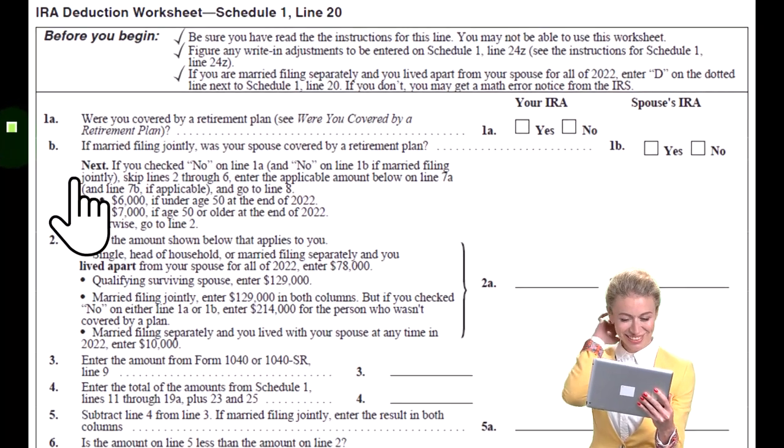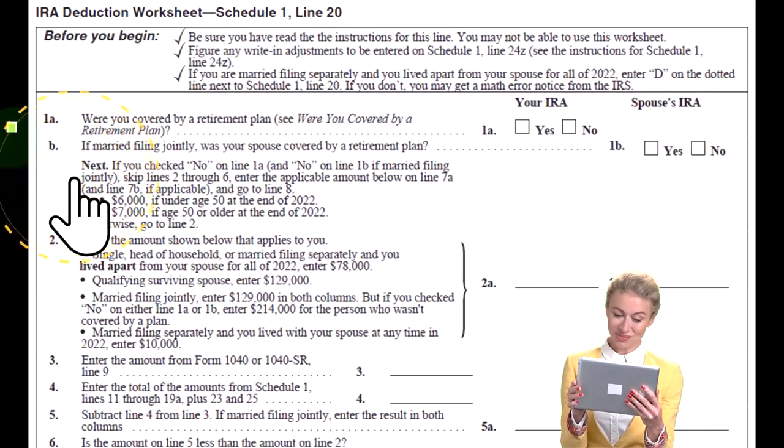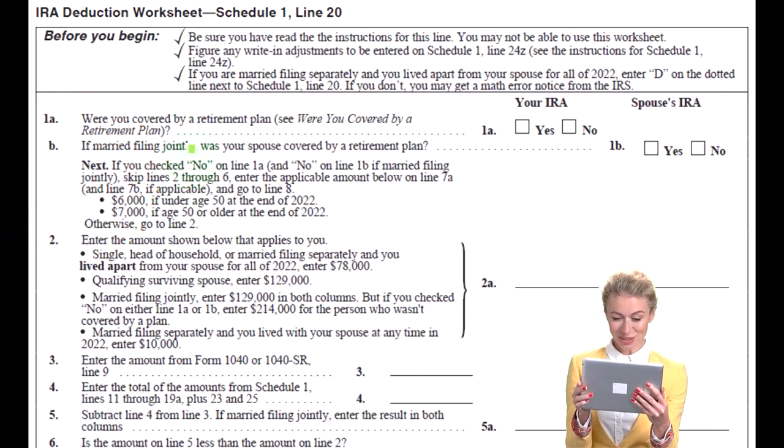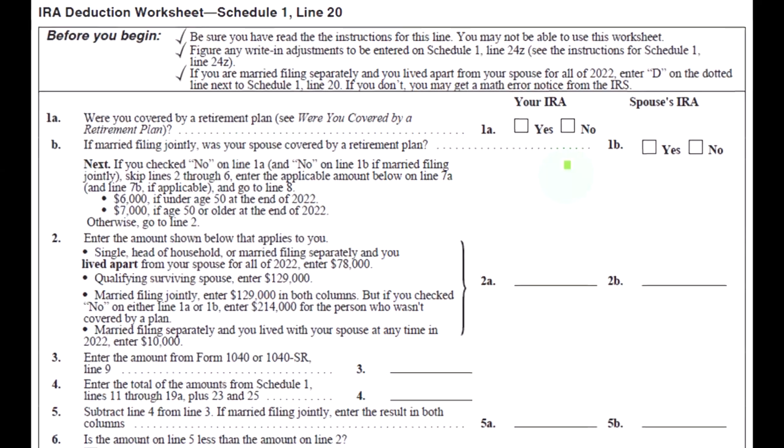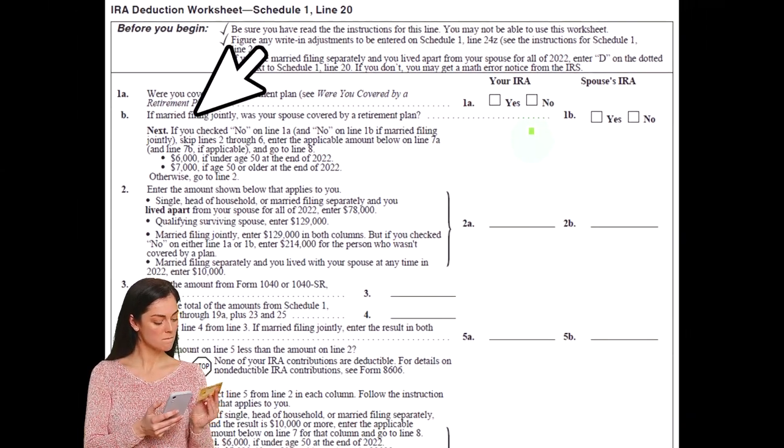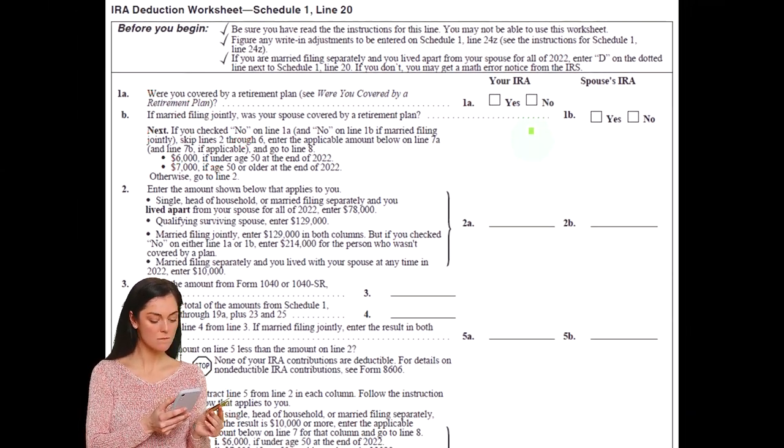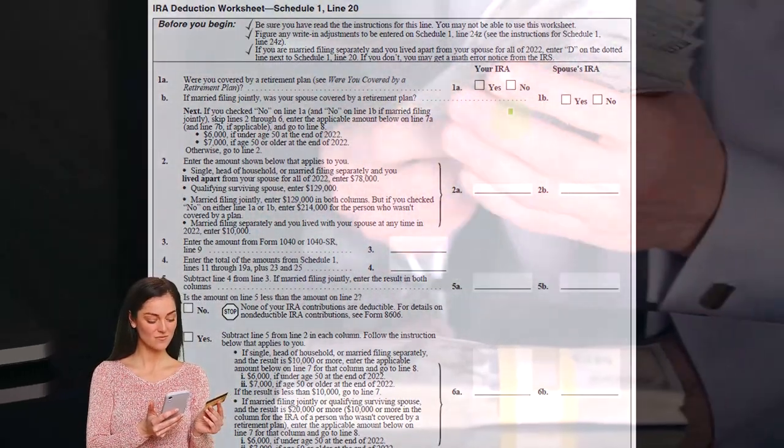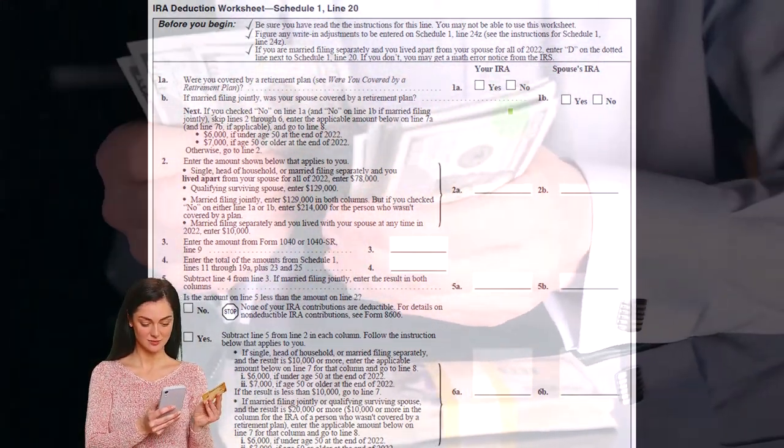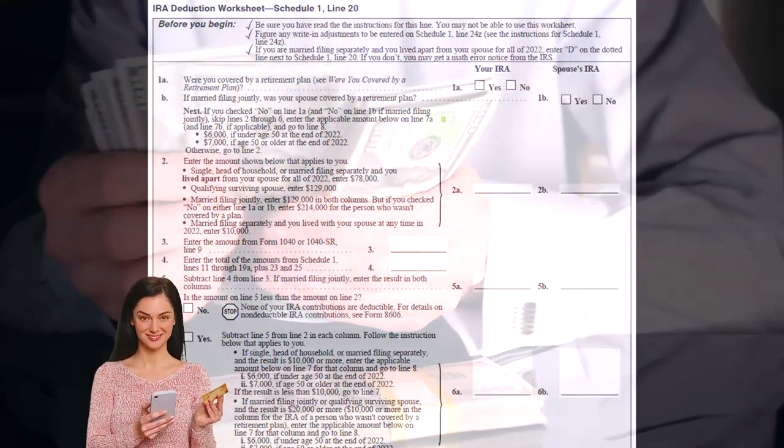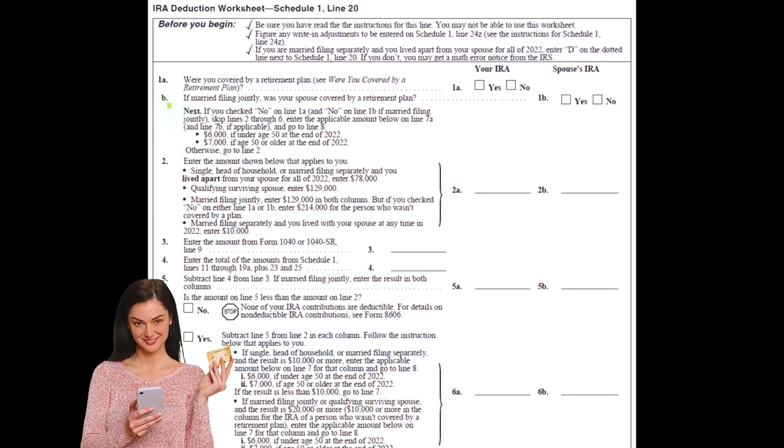B, if married filing jointly, was your spouse covered by a retirement plan? So now when we're married, that's going to add a level of complexity because even if just our spouse had access to the 401k plan, depending on the income thresholds, it could have an impact on how much we can put into the retirement plan or an IRA, I should say. We're focused on the IRA.